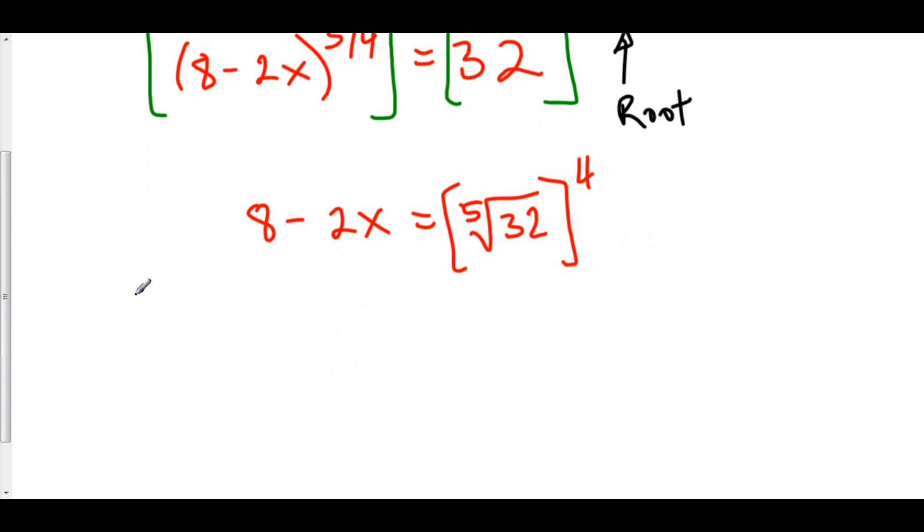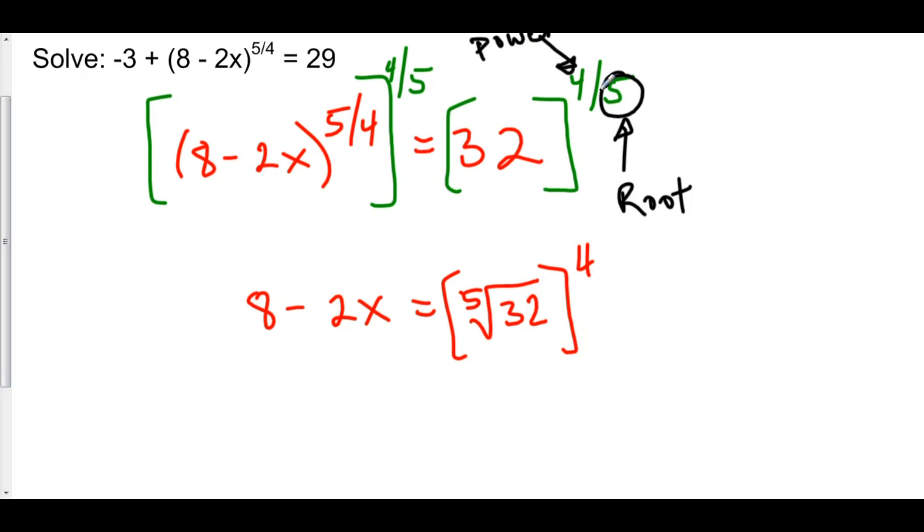Well, the fifth root of 32, let's use this up here. The fifth root of 32, that's 2. And then 2 raised to the fourth power is 16.